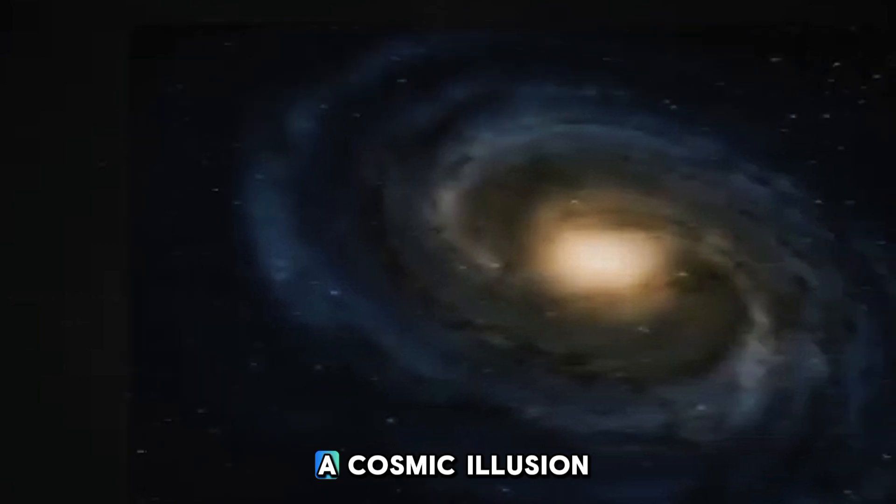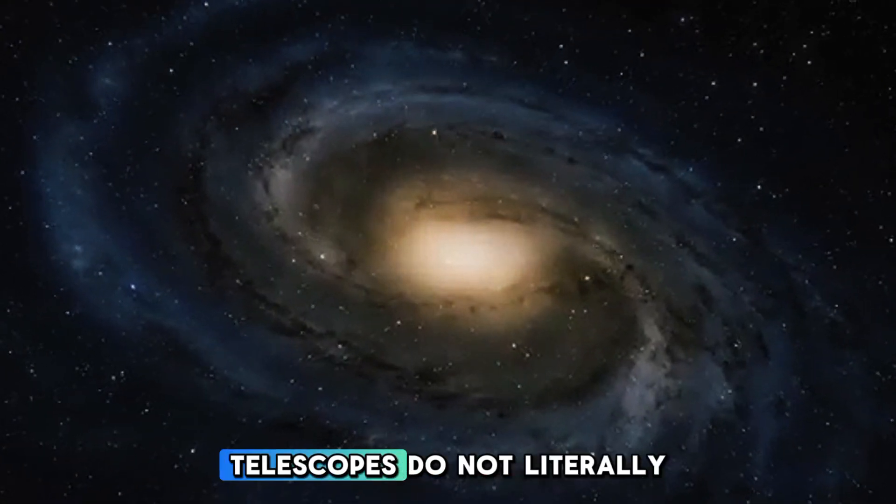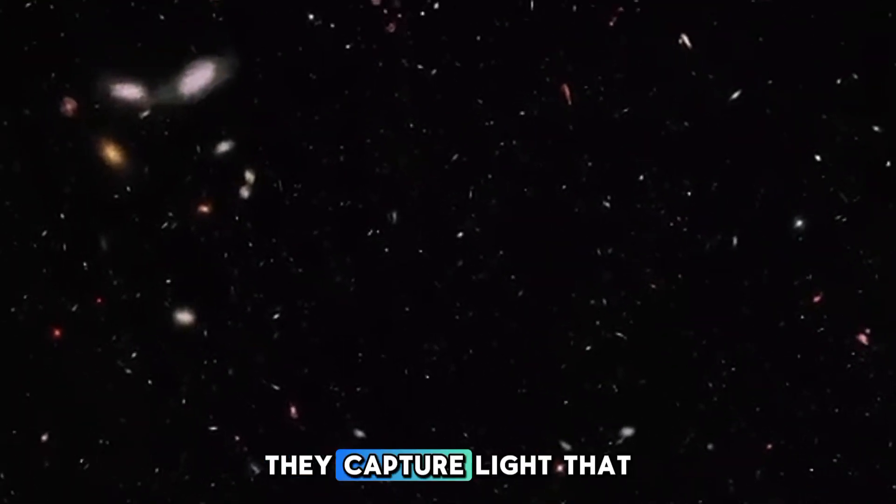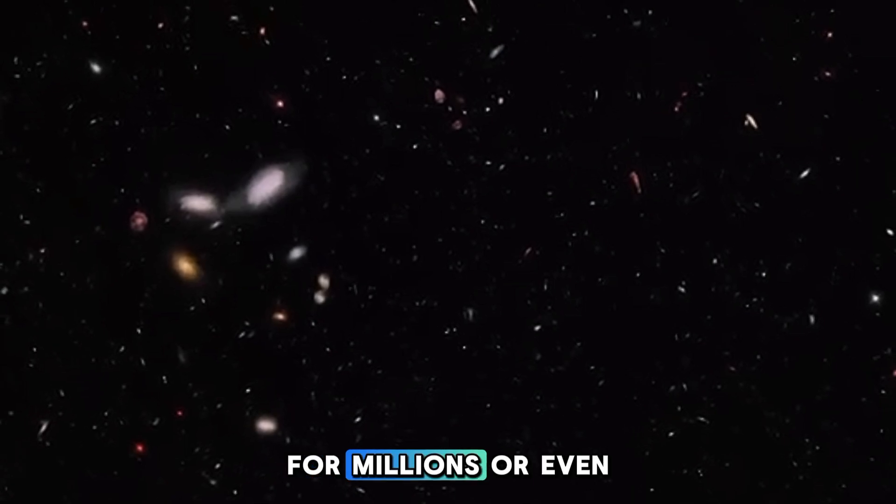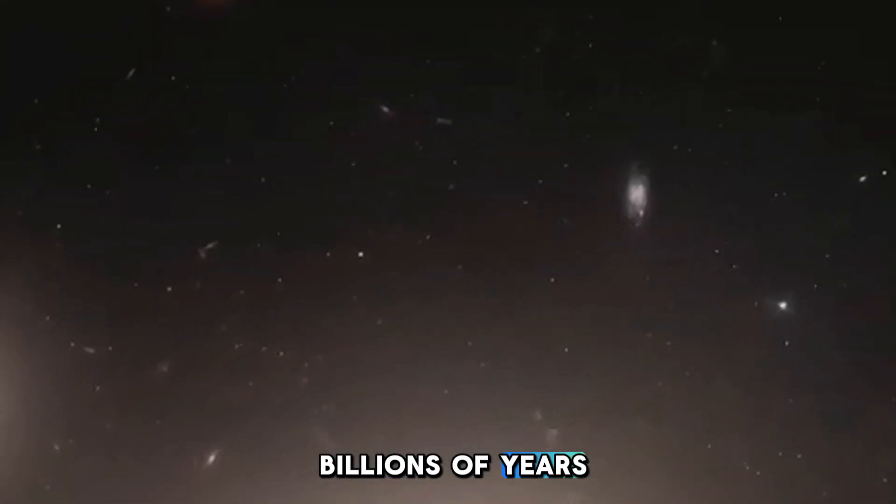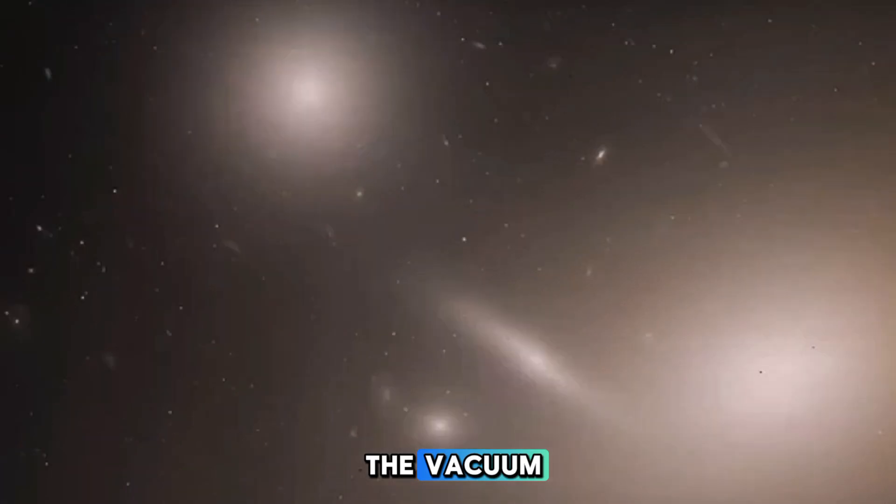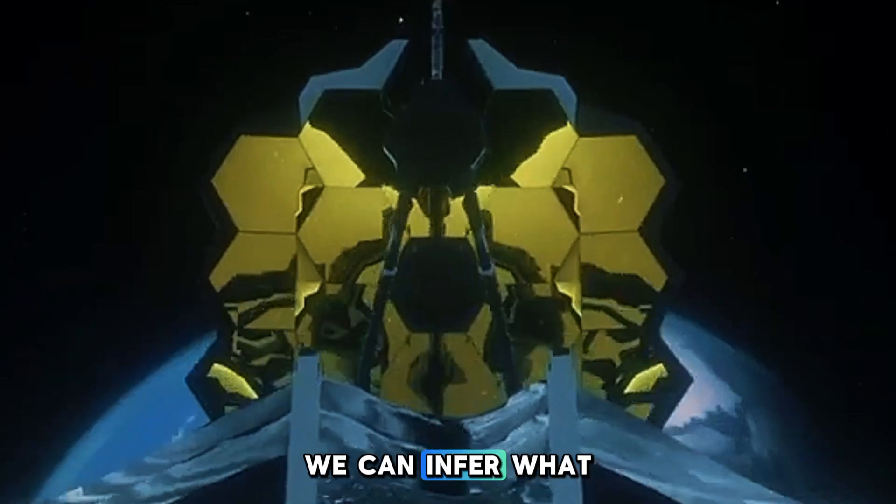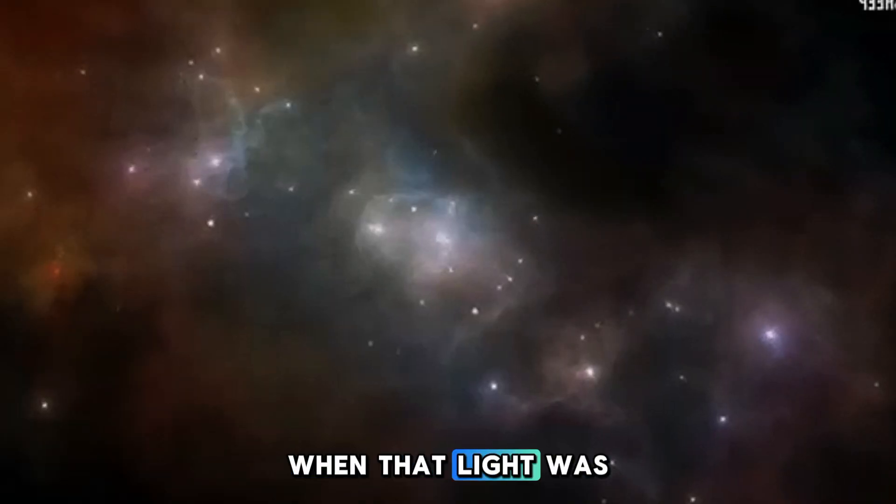Looking back in time, a cosmic illusion. Telescopes do not literally look back in time. Instead, they capture light that has traveled through space for millions or even billions of years, remaining mostly undisturbed in the vacuum. By analyzing this light as it exists today, we can infer what the universe looked like when that light was first emitted.